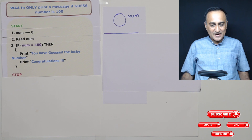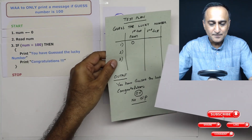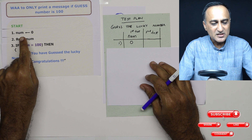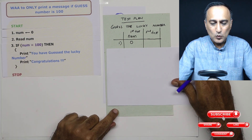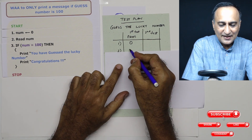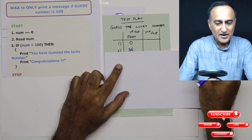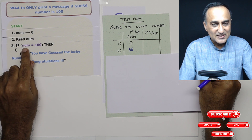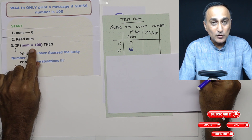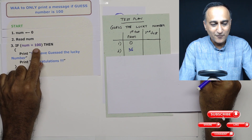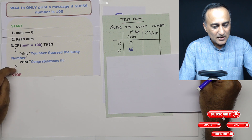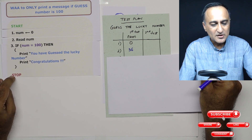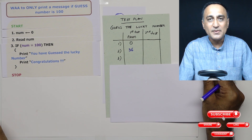In order to understand how this works, take a look at our test plan. In step one, number is zero. In step two, I read a number — let's say I read 36. When I come to step three, the number is replaced with 36: is 36 equal to 100? Not true — it is false. Since this flower bracket is associated with the 'if', it will not go into that block; it will directly come to a stop. So the output is: nothing will be displayed on the screen.